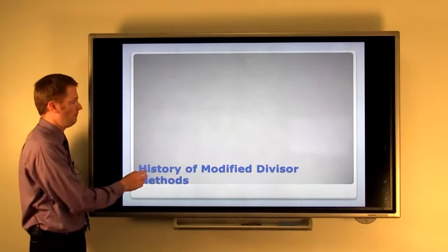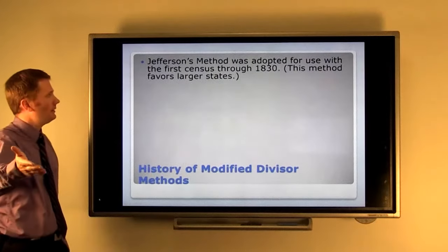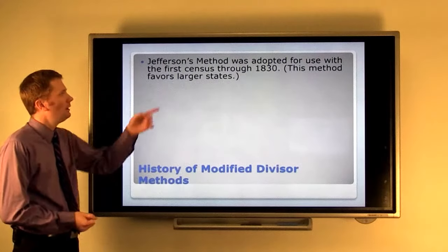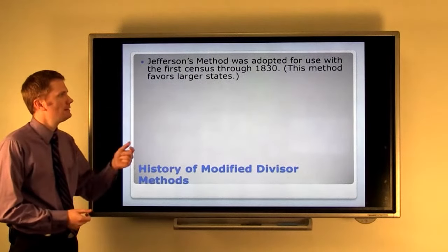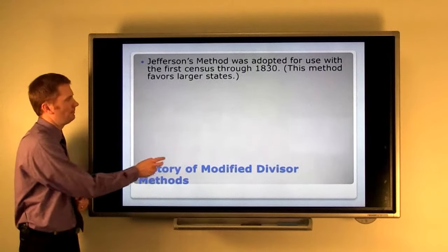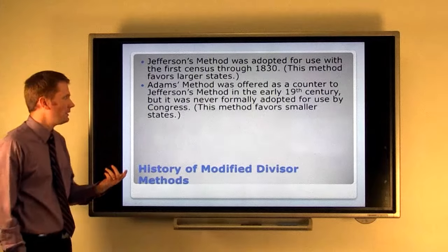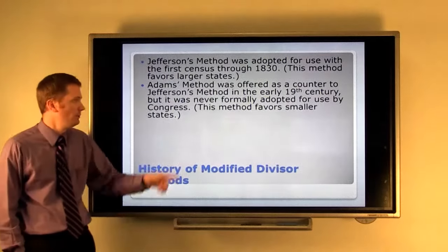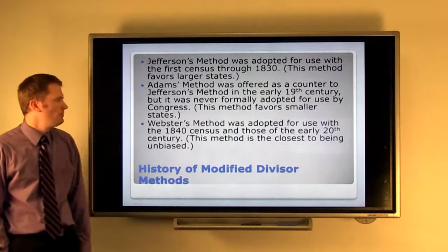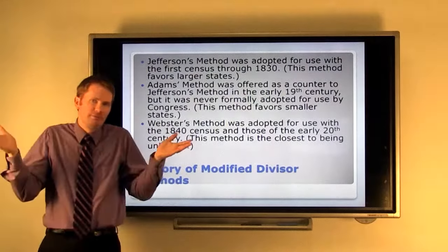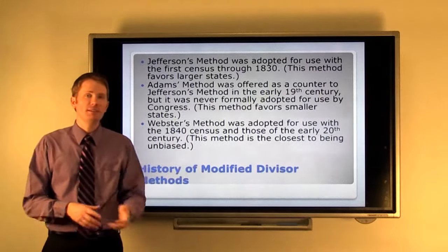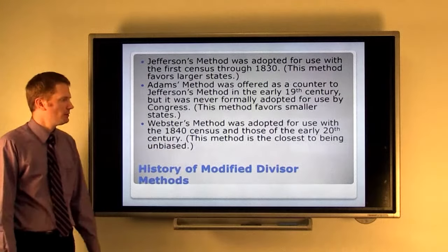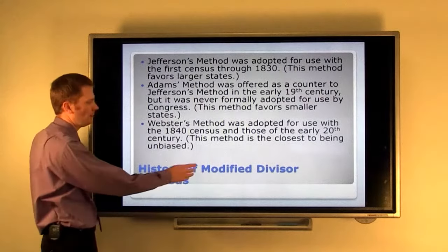So now let's look at the history. We've already looked at the fact that Jefferson's method seems to favor the largest states. And it was used in our country's history up and through the census after 1830. Then Adam's method was offered as a counter to Jefferson's method at some point in the early 19th century, but it was never actually formally adopted for use by Congress. Webster's method was used at two interesting times. It was used in 1840 census. It was left alone for a while. It was brought back at the beginning of the 20th century. A lot of political scientists and mathematicians feel that Webster's method is the most unbiased.